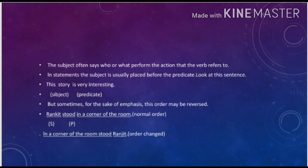But sometimes, the order often changes for the sake of emphasis. If you see the second part, it says, In a corner of the room stood Ranjit. Now here, first the predicate will come and it will be followed by the subject. This is the reverse order where we are emphasizing first on the predicate and second is the subject.